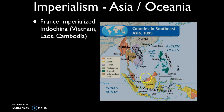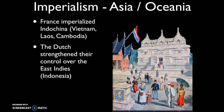The Dutch controlled Indonesia — the East Indies — and you may recall from Period 4 that it was the Dutch who were extracting spices from these islands, making it a very lucrative colony. The Dutch strengthened their control over the East Indies, what is today the modern-day country of Indonesia.